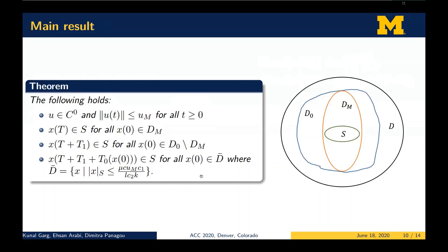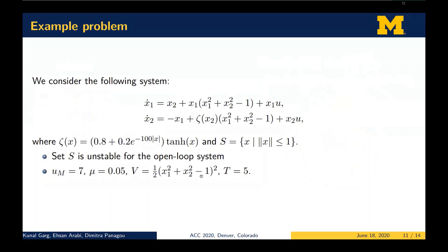That is the main result. Now we will see one simulation example. We consider a particular system dynamics where, in the absence of control input, the system is unstable with respect to the unit circle around the origin, and we want to stabilize the system to that unit circle. We consider a specific Lyapunov function along with input bounds and controller parameters, and we require that the system trajectories reach the set within five units of time.